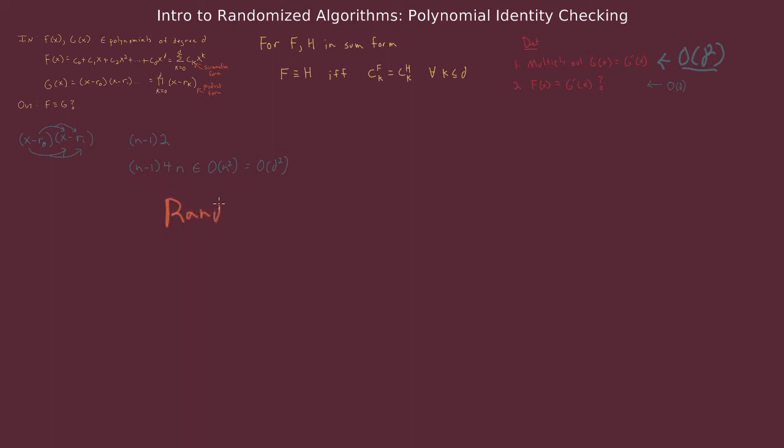So let's look at the randomized algorithm. It will be even simpler to understand, although it also takes two steps. We randomly select an integer t from the set of integers 1 to c times d, where c is a parameter set by the human that we just introduced, and d is the degree of the input polynomials. Then we simply evaluate our two input polynomials at t. If f of t equals g of t, then the algorithm outputs that f and g are identical. If f of t does not equal g of t, then the algorithm outputs that f and g are not identical.